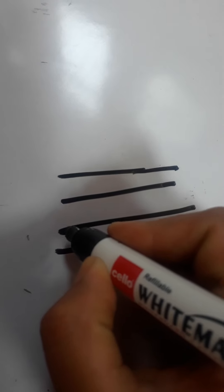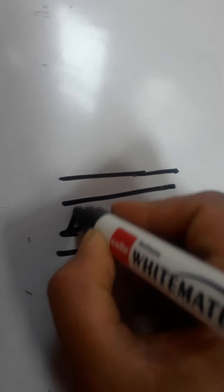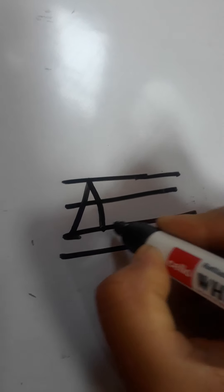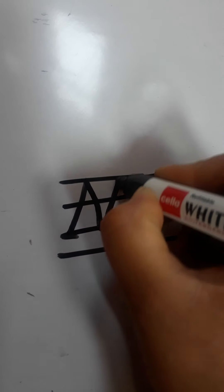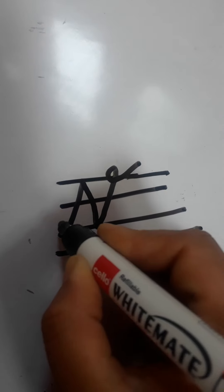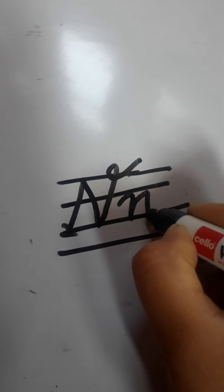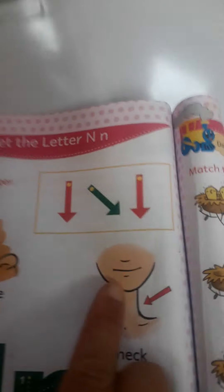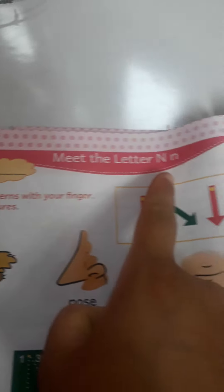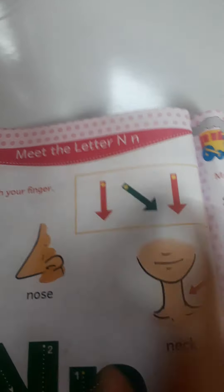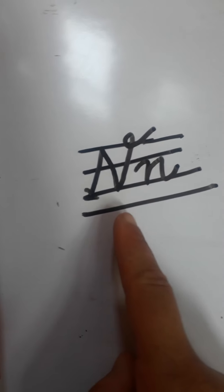First I will write here a capital N — look here, this way, this way, and this way. Here I write a small n. Look at your book: here is given a capital N and here is given a small n, and your ma'am is also writing a capital N and a small n.